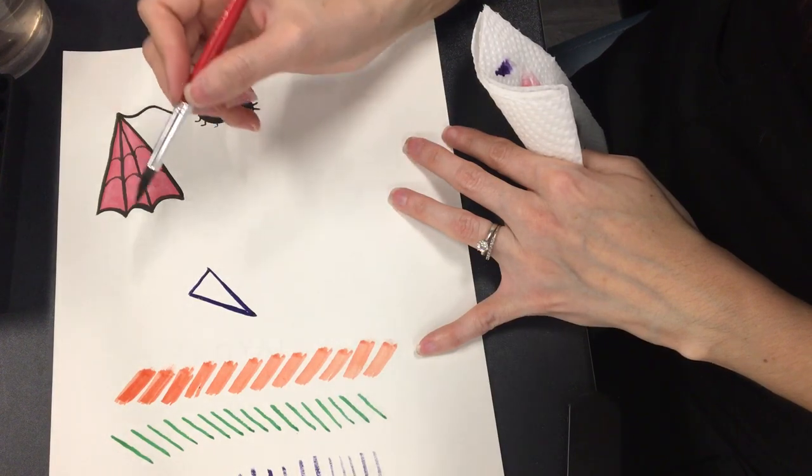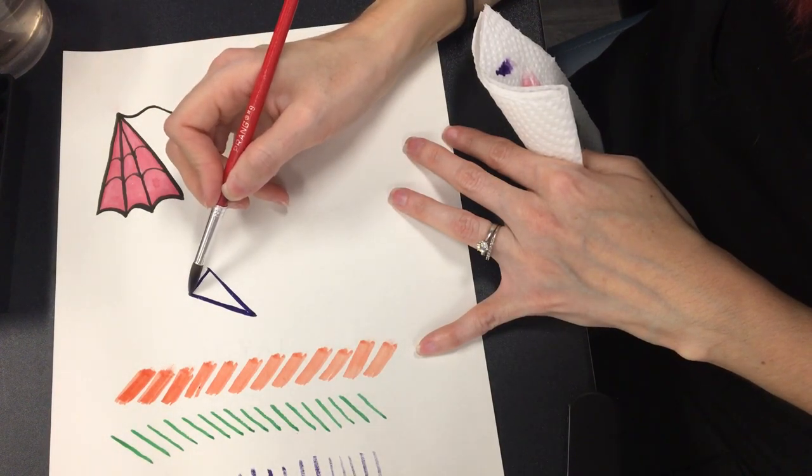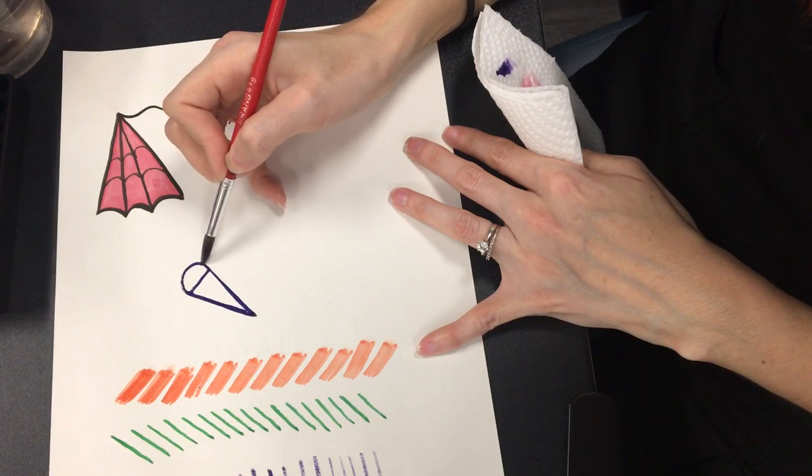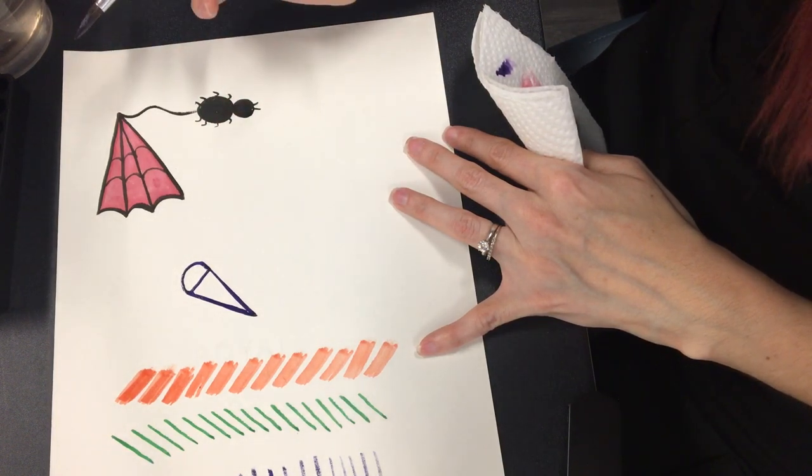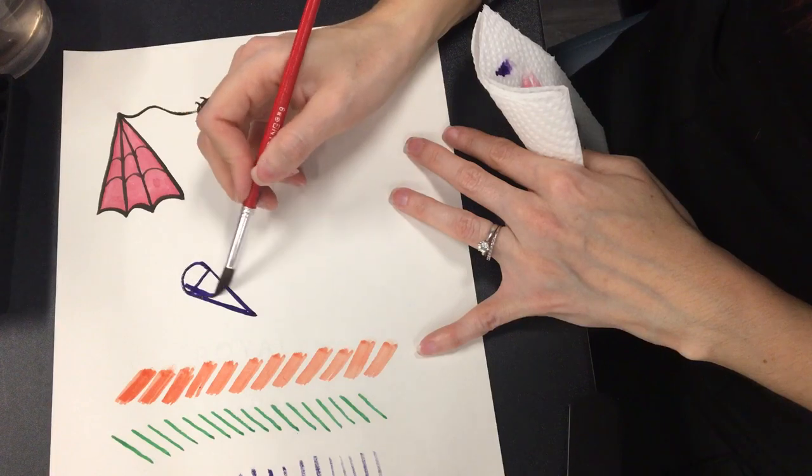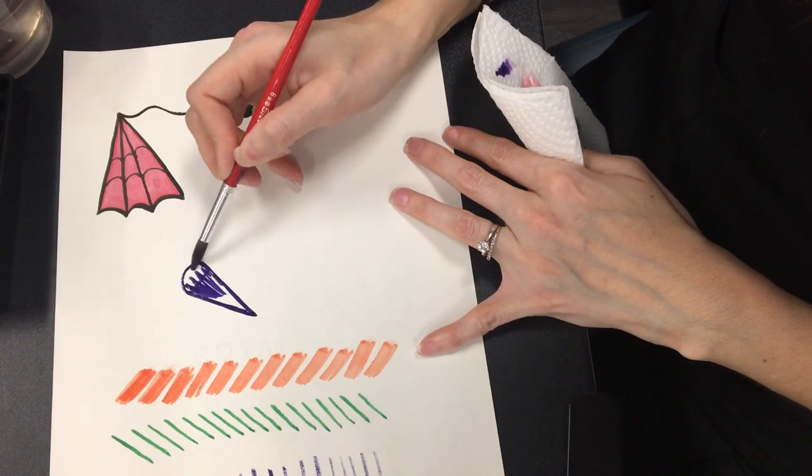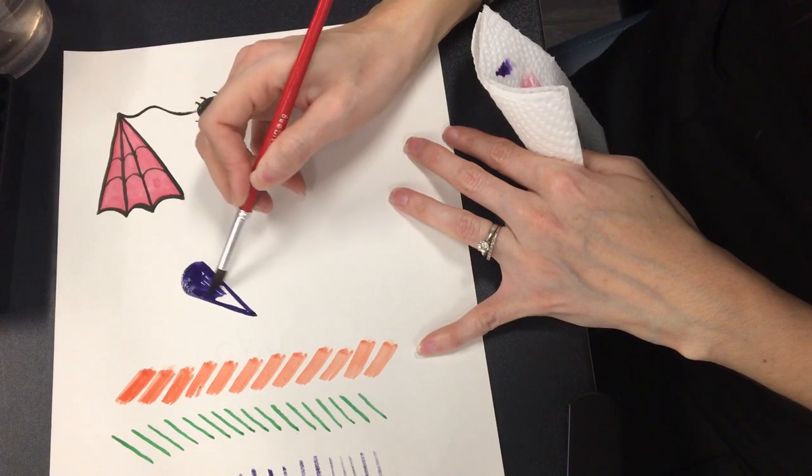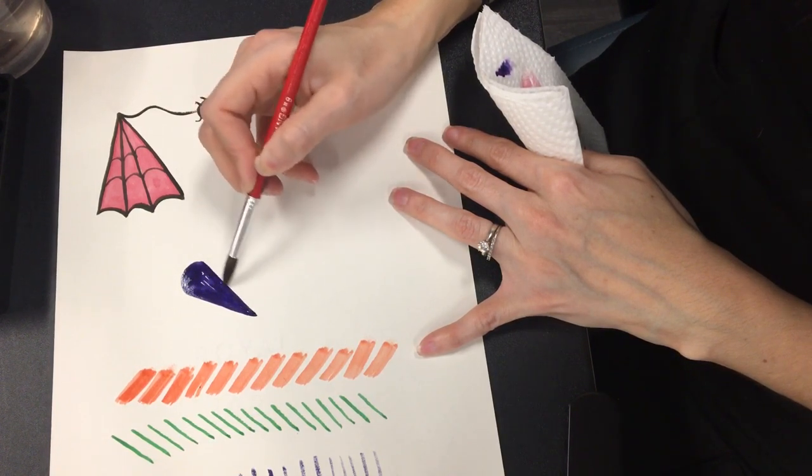And then I'm going to do a snow cone circle on the top. Like the letter C, like so. Then I'm going to color it in. Again, it looks black on the screen but it is purple.